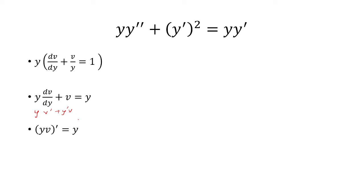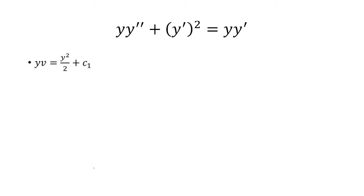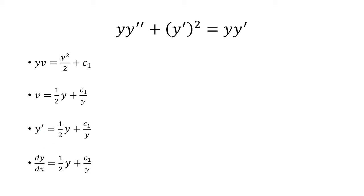y prime here is just 1. So I cancel the derivative by integrating both sides. My goal is to solve for y, but first let's solve for v. To solve for v, I divide both sides by y. Remember, v was y prime, so that can be rewritten as dy over dx, and this is now a separable differential equation.